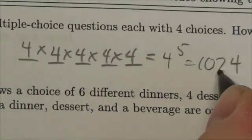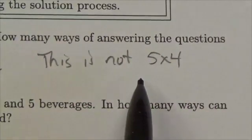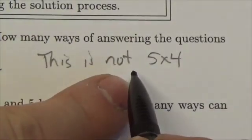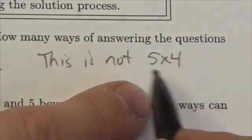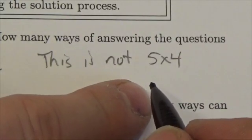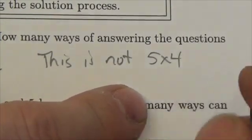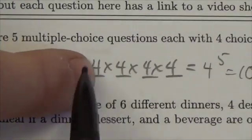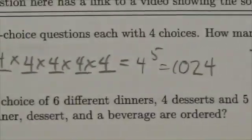Four to the fifth is 1,024. Now I want to be clear: this is NOT five times four. In that case, five represents one choice out of five options and four represents one choice out of four options — so you'd only be answering one question. Each question is represented by a single factor, so we need four multiplied five times.